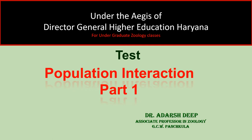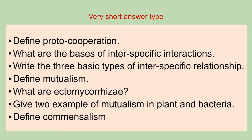Three categories of questions may be framed from this chapter. The first category is very short answer type, which you have to answer in two to three lines. The first question from this category is: define proto-cooperation. Second is: what are the basis of inter-specific interactions. Third question is: write the three basic types of inter-specific relationship.